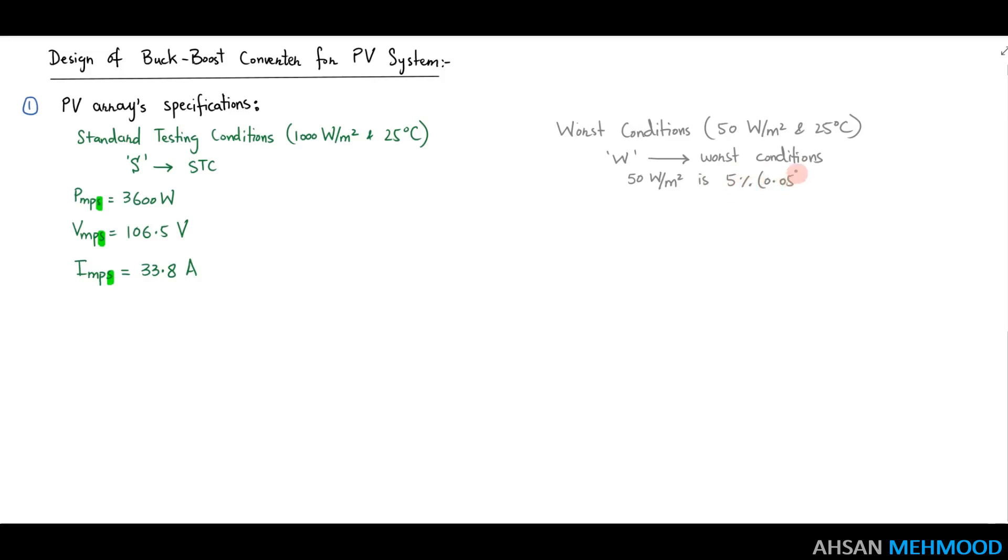Using standard testing condition values, we can calculate corresponding values for worst case scenario. For example, 50 Watt per meter square is 5% of 1000 Watt per meter square. Hence maximum power for worst case PMPW is 0.05 times 3600 which is equal to 180 Watt.